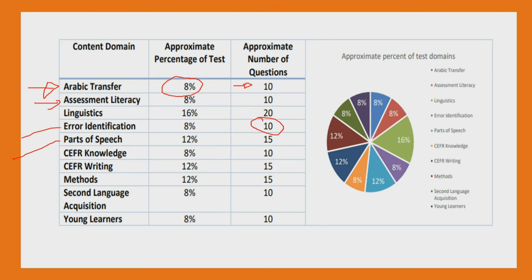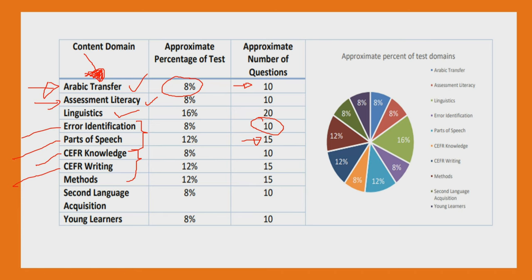I call the parts of speech questions 'baby questions.' If you are a practicing English teacher, identifying parts of speech is not a big deal — you can easily score those 15 marks. Next is CEFR knowledge and CEFR writing; these two are quite tricky. If you are not a native Arabic speaker, the Arabic transfer section is the toughest part of the exam, but I am going to make a complete video about how I prepared for it. The toughest parts are Arabic transfer, assessment literacy, and linguistics; the easiest are error identification and parts of speech.